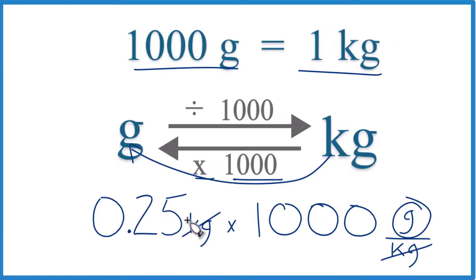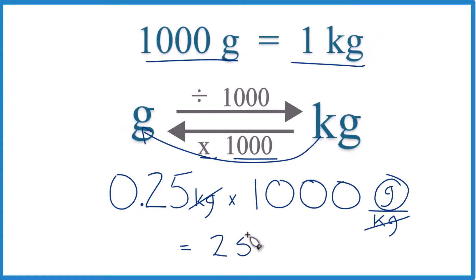So 0.25 times a thousand grams equals 250 grams. When we convert 0.25 kilograms to grams, we get 250 grams. This is Dr. B. Thanks for watching.